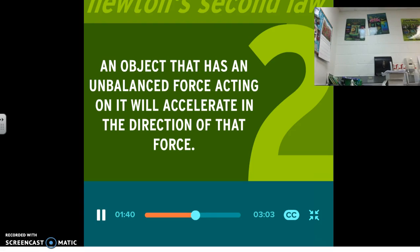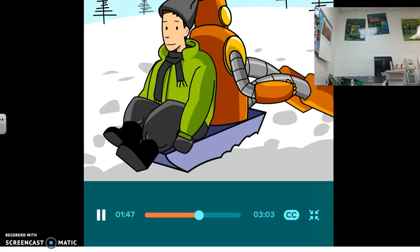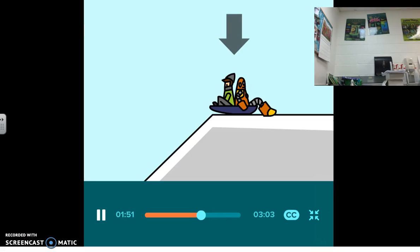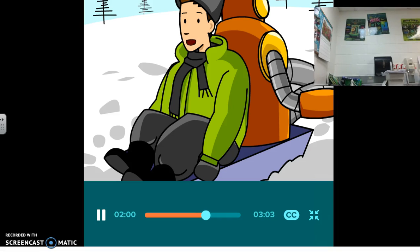Newton's second law says an object that has an unbalanced force acting on it will accelerate in the direction of that force. When you're just sitting there, two forces are acting on you all the time. Right now, gravity is pulling our mass toward the center of the earth, and the upward normal force of the ground is pushing up against gravity.